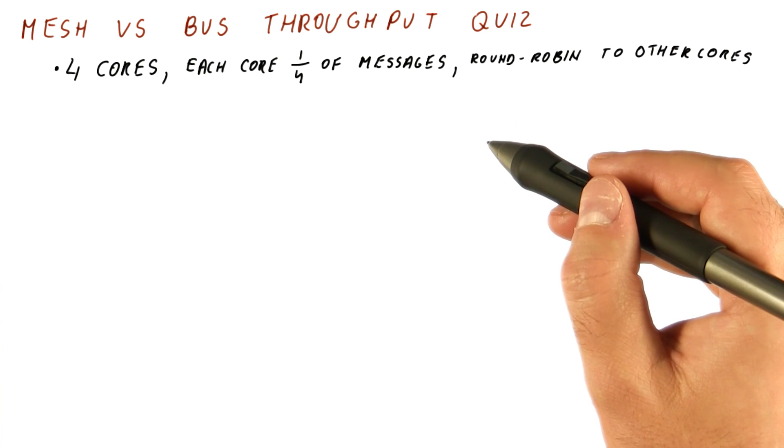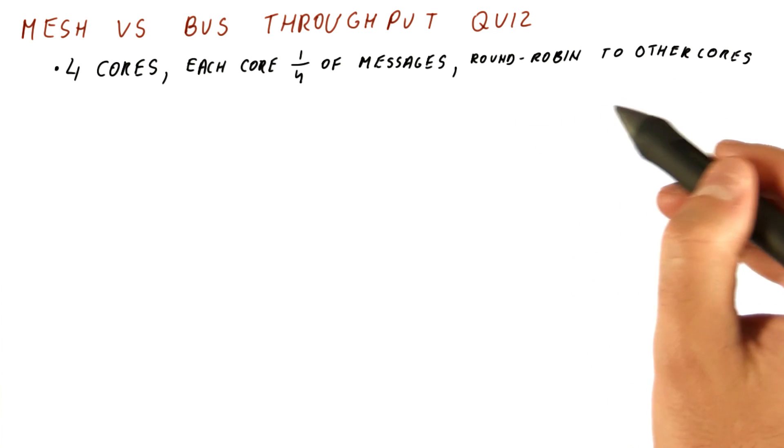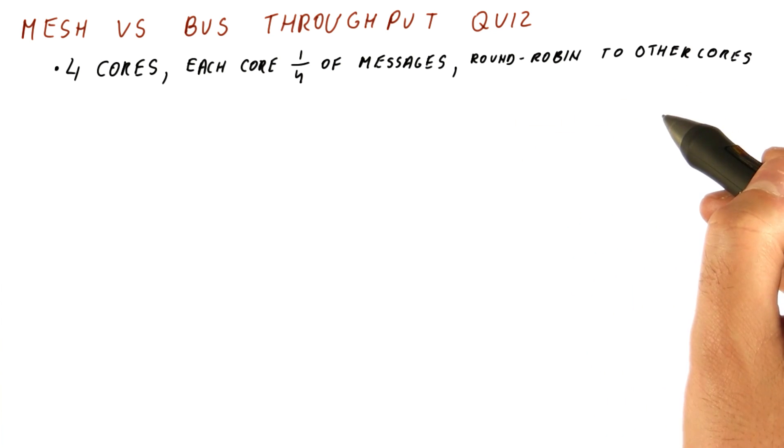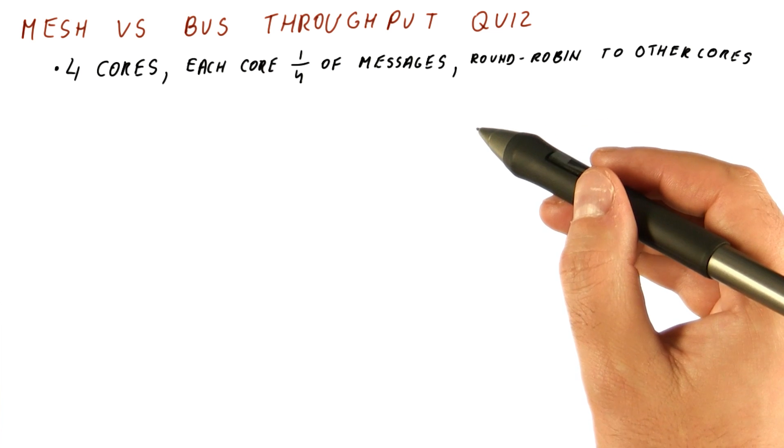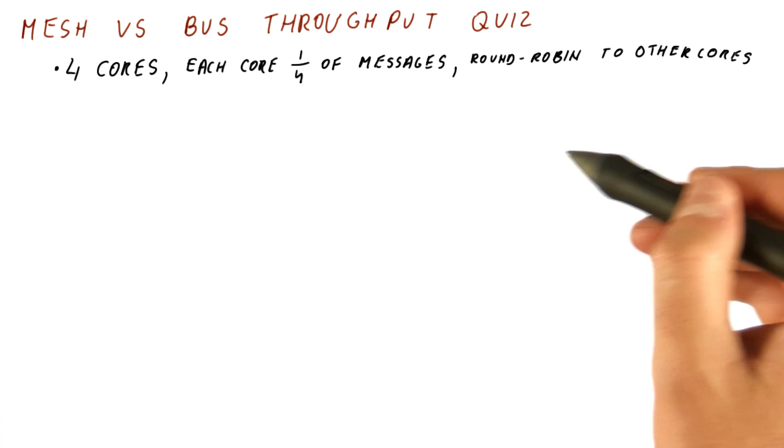So if we are core zero, we send messages to one, then two, then three, then one, then two, then three, et cetera. If we're core two, then we send to zero, one, three, zero, one, three, et cetera.